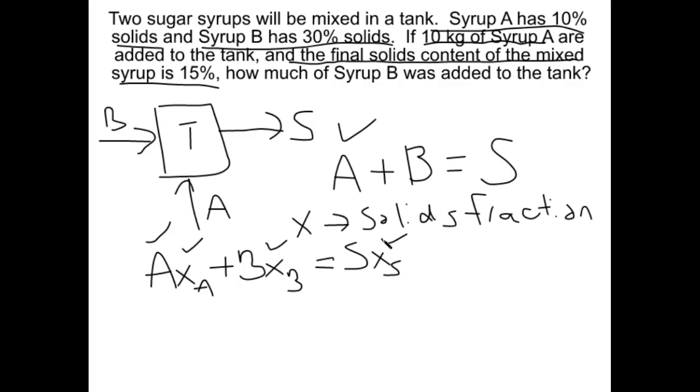Since that first equation, the total mass balance, is already solved for S, let's just substitute what S is equal to into our component mass balance. That way we only have one unknown in our component mass balance and we can go ahead and solve for it. So here we go, now I'm substituting for S right here. Now the only unknown in our equation is B, so we can solve for B.